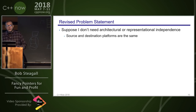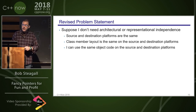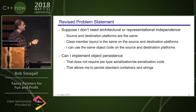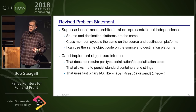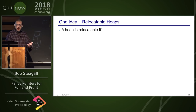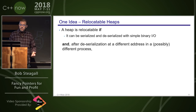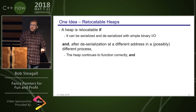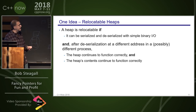Let's revise the problem statement. Suppose I don't need architectural or representational independence—my source and destination platforms are the same, class member layout is identical, and I can use the same object code. Can I implement object persistence without any per-type serialization code, that allows me to persist standard containers and strings, and allows fast binary I/O like write/read or send/receive?